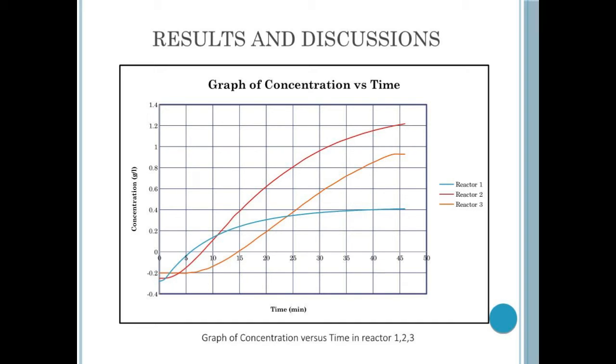As we can see, in the first 10 minutes, reactor 1 has the highest increase of concentration over time. This is because the concentration flows directly into reactor 1 followed by reactor 2 and then reactor 3. This results in reactor 2 having a slower rate at the beginning and in reactor 3, it is even slower.